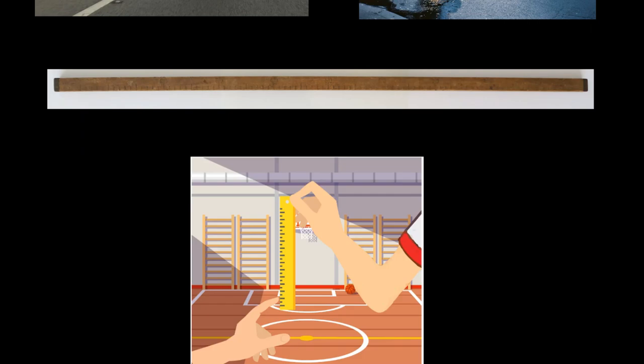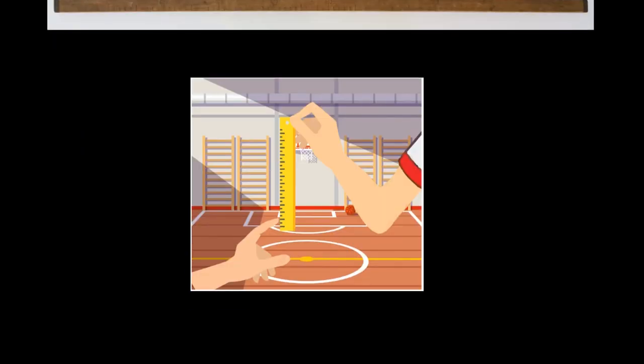What you do is you take this meter ruler and person number one dangles the ruler in between the fingers of person number two. So over here we have person one, and over here we have person two.